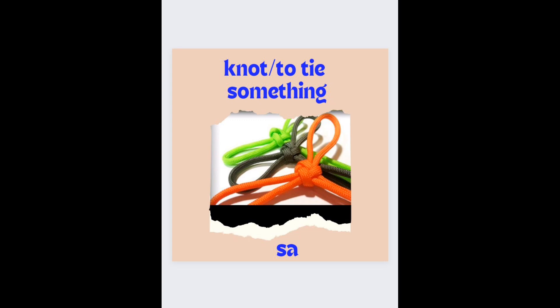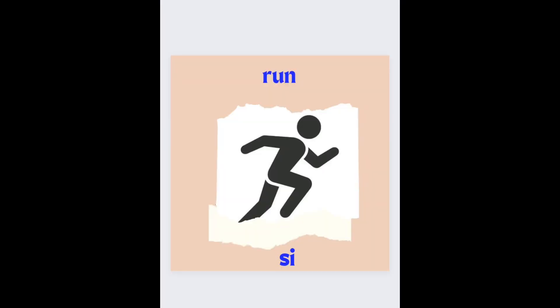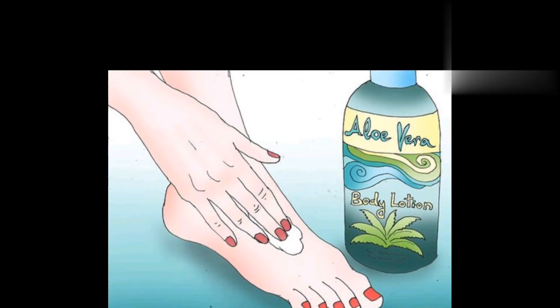Another one: 'se' or 'si'. If you say 'se' it means run — se. But if you say 'si' it means to apply — to apply makeup, body cream, or any other thing.